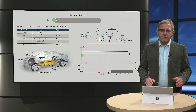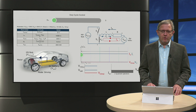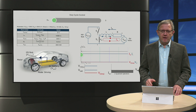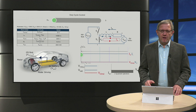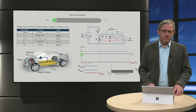So we have seen how the magnitude of duty cycle controls the mode of operation and direction of the current, hence the power transferred, depending on whether the converter is operating in buck or boost mode. Thank you.